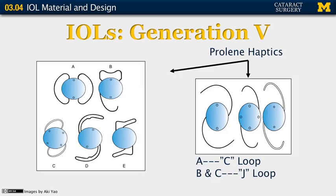The fifth generation of lenses also include lenses for posterior chamber implantation with prolene haptics, or three-piece lenses, that allowed the lens to be stable in the capsular bag. We see some familiar looking C loop and J loop type lenses on the right.